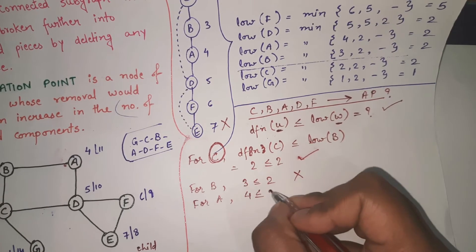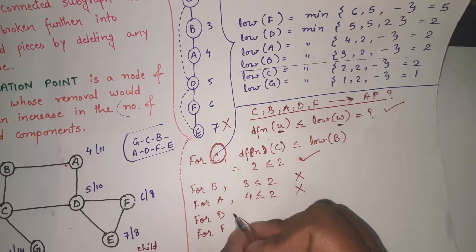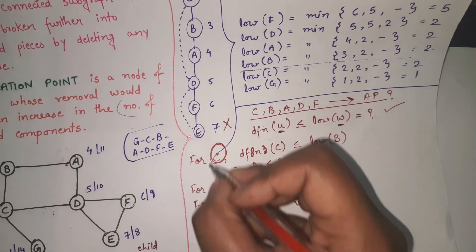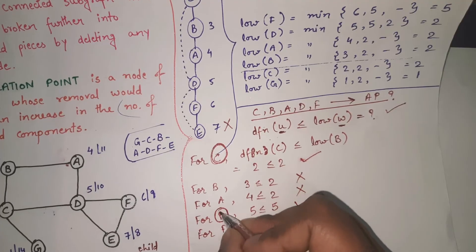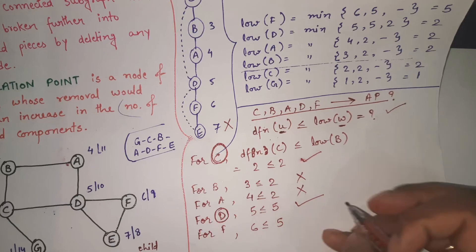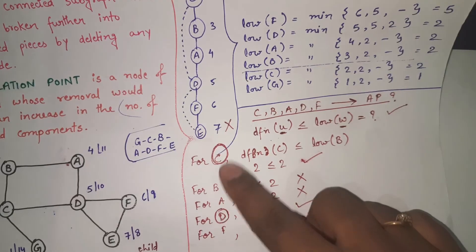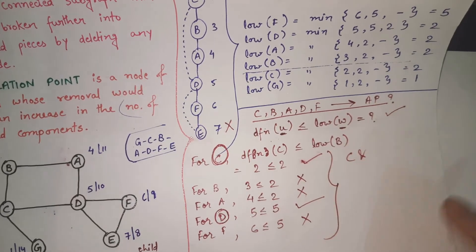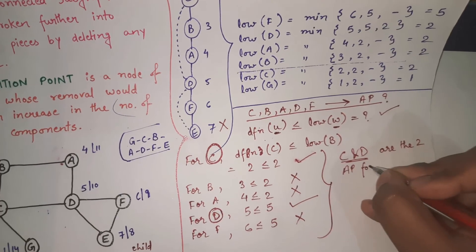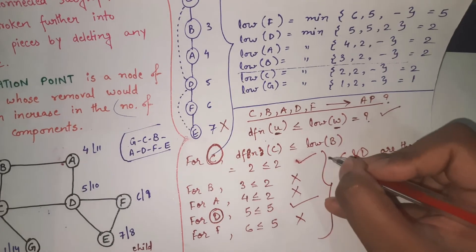Check for D: DFN(D) = 5 ≤ LOW(F) = 5 — true, so D is an articulation point. Check for F: DFN(F) = 6 ≤ LOW(E) = 5 — false. Therefore, there are only two articulation points: C and D.